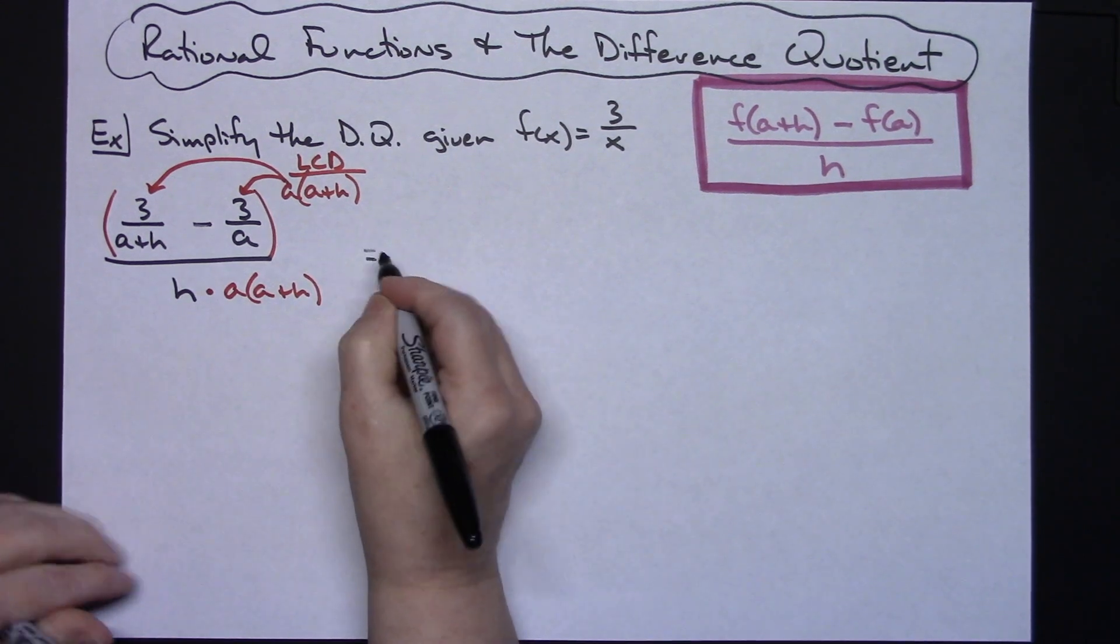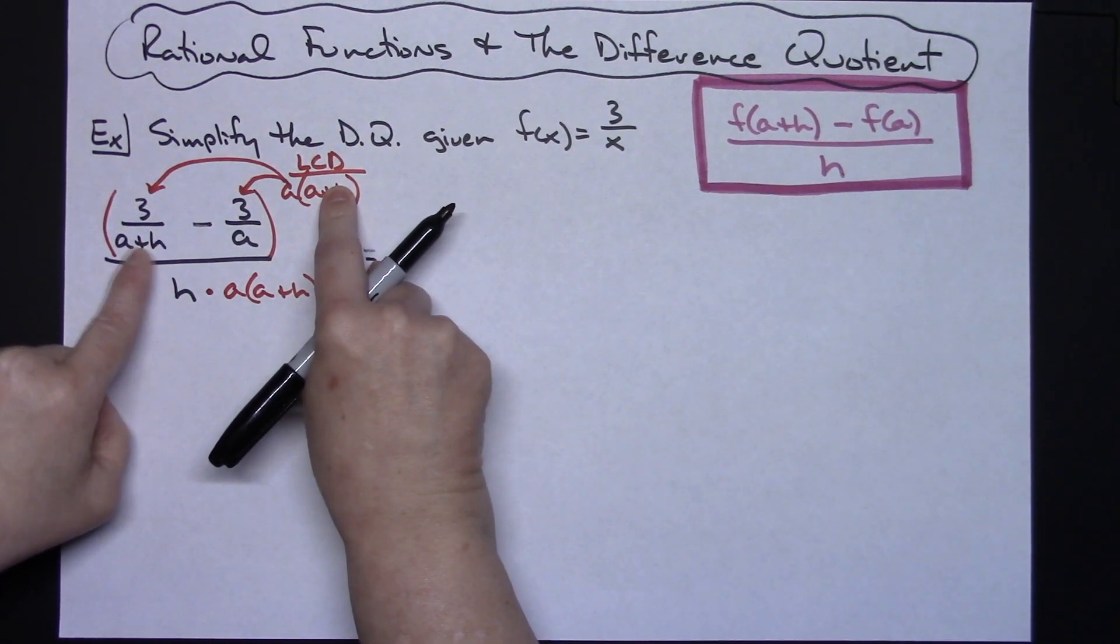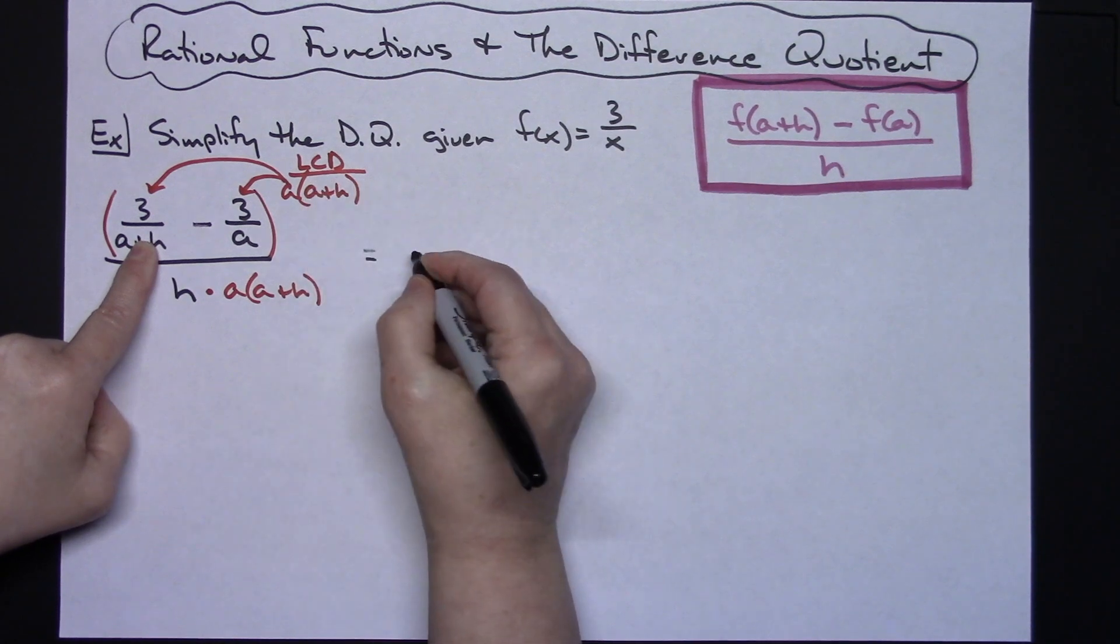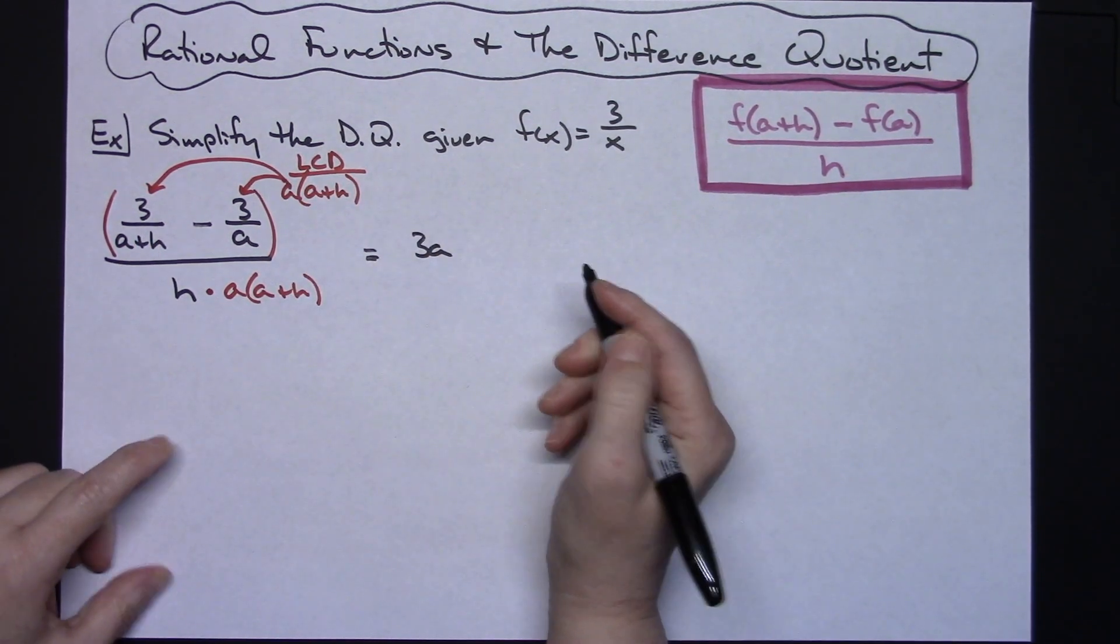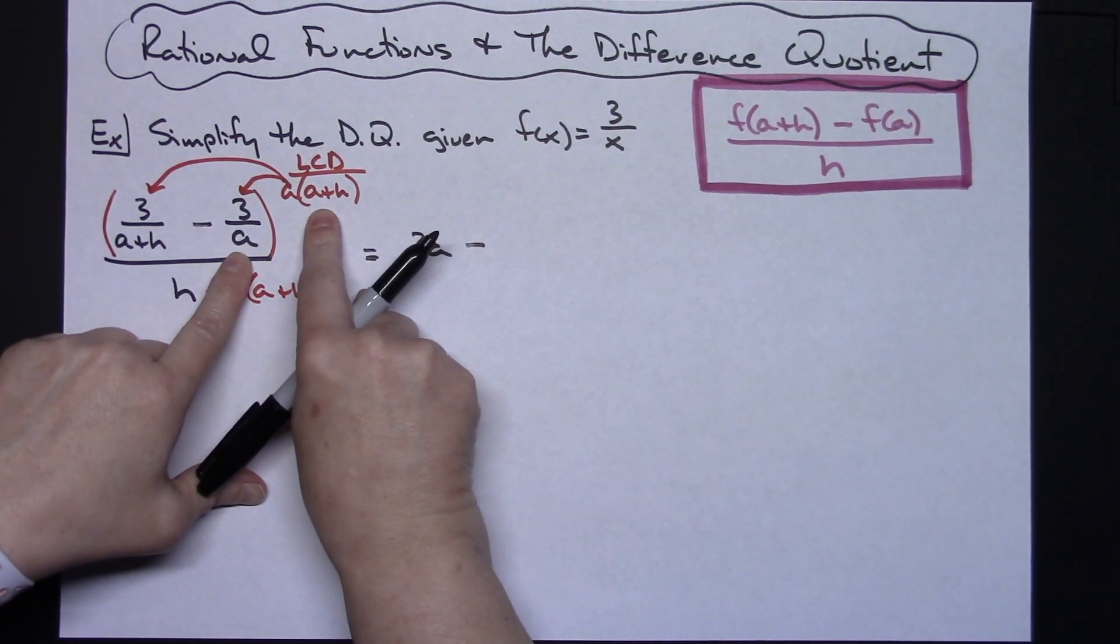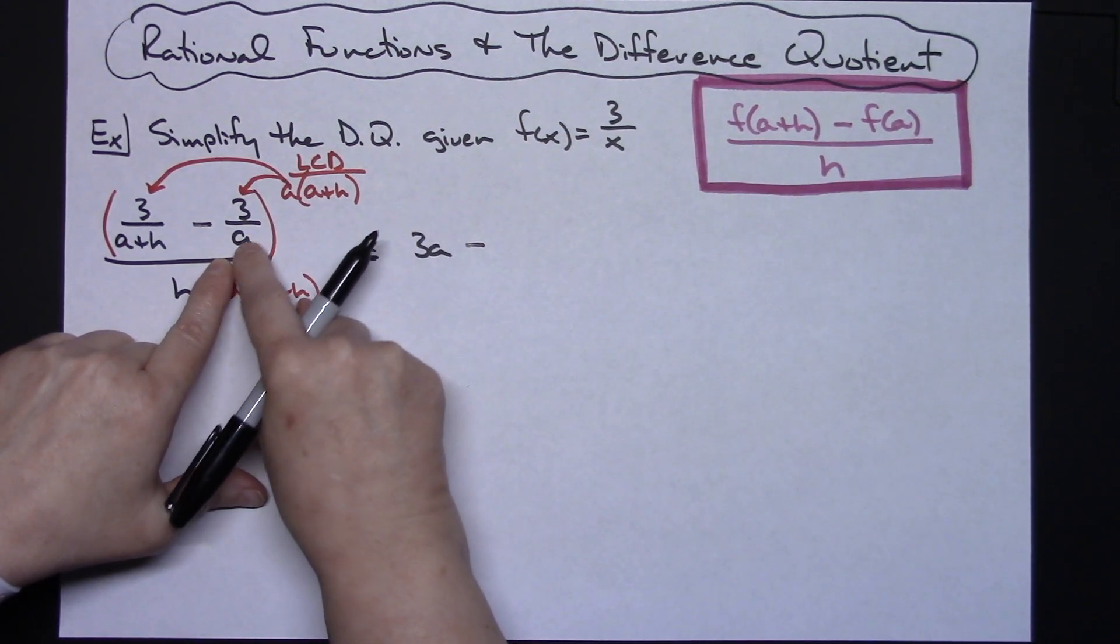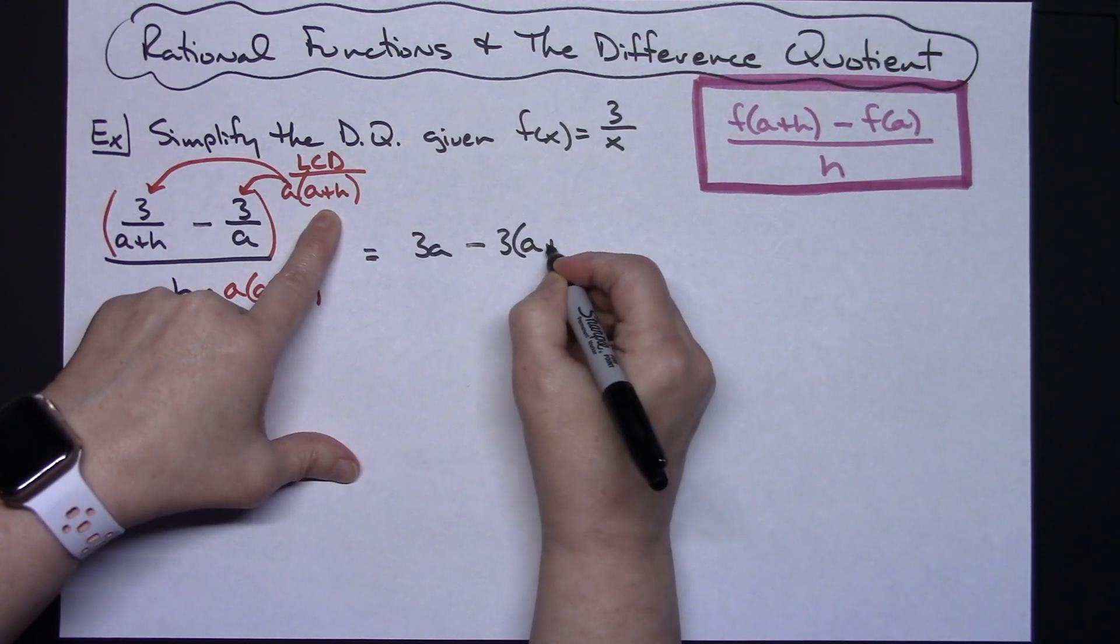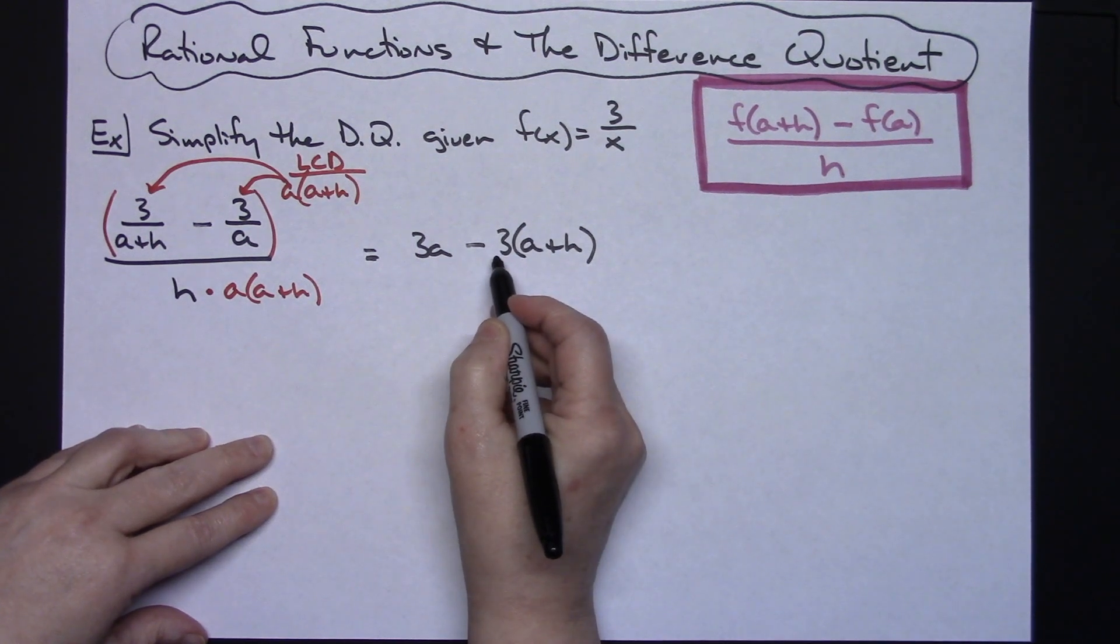Let's take a look at what's going to happen when I multiply these two things. My a plus h and a plus h is going to cross out, that's going to leave me with a 3 and an a, and it's eliminating that fraction which is what I want to happen. Then it's going to be minus. Now I'm going to again multiply by that least common denominator. This time the a's get crossed out which is going to leave me with 3 times the a plus h, keeping in mind that that 3 is going to be negative right there.